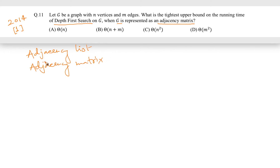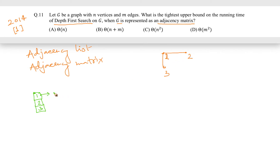In adjacency list representation, let us say there are three nodes and two edges. We represent the graph such that there is a list for each node — say nodes one, two, and three — with pointers to their neighbors. Node one has neighbors two and three, so two and three will be in its list. Node two has only one edge, two to one, and node three also has one edge, three to one. This is the adjacency list representation.